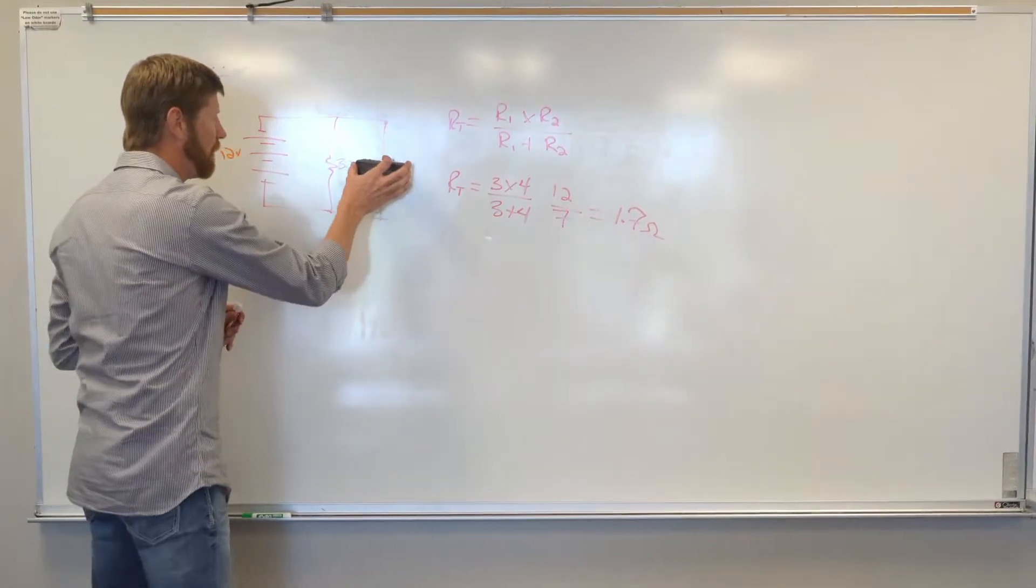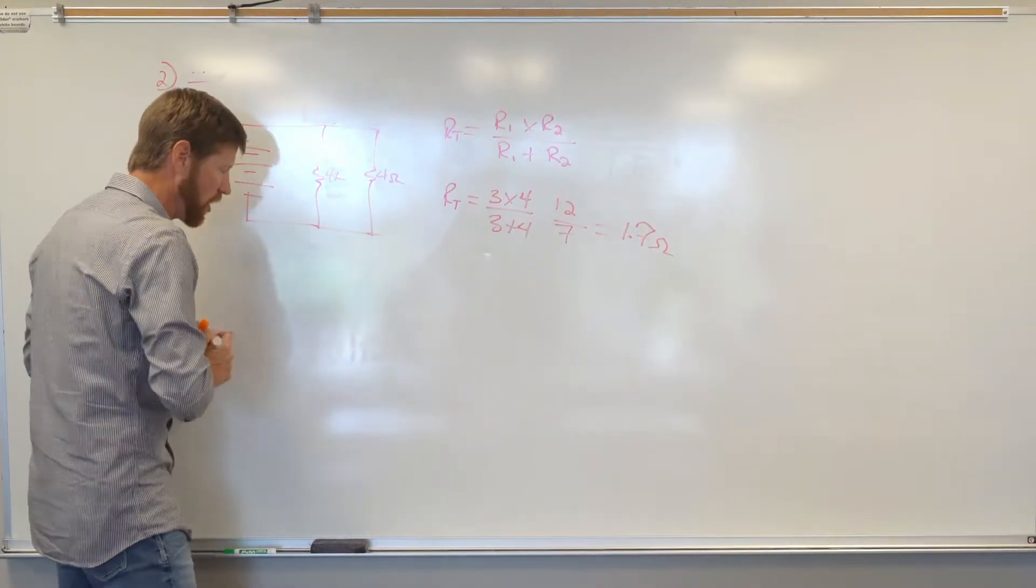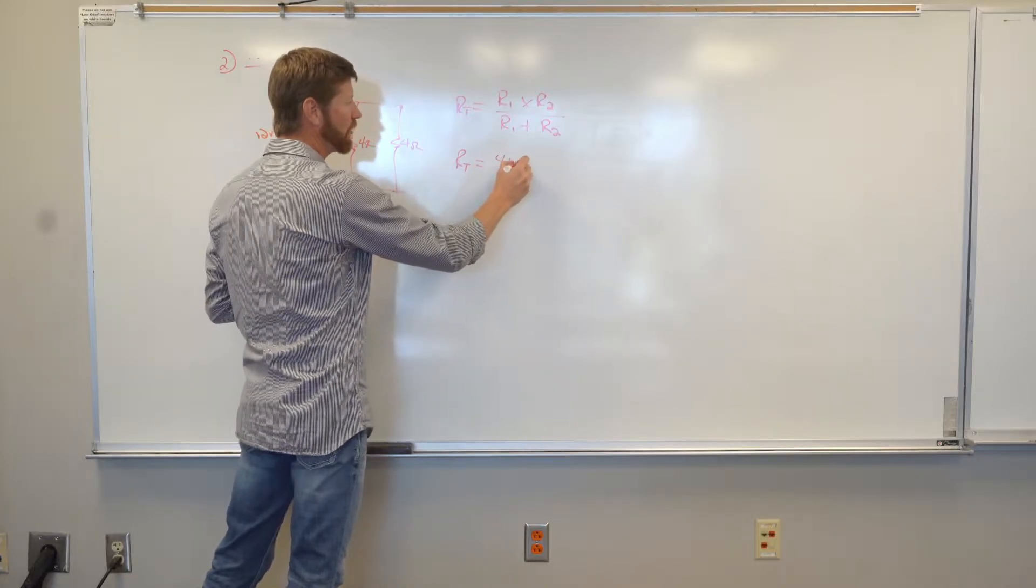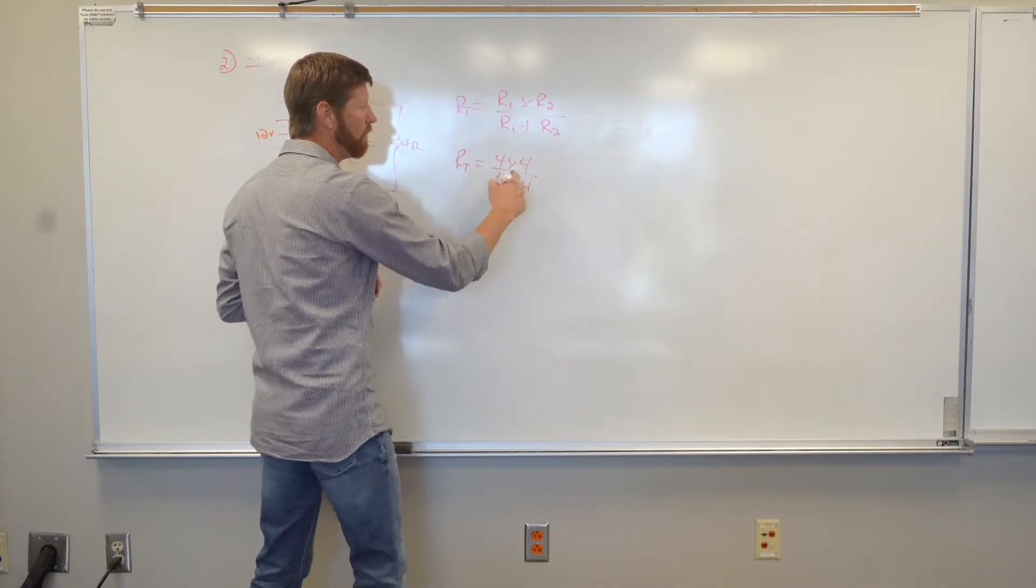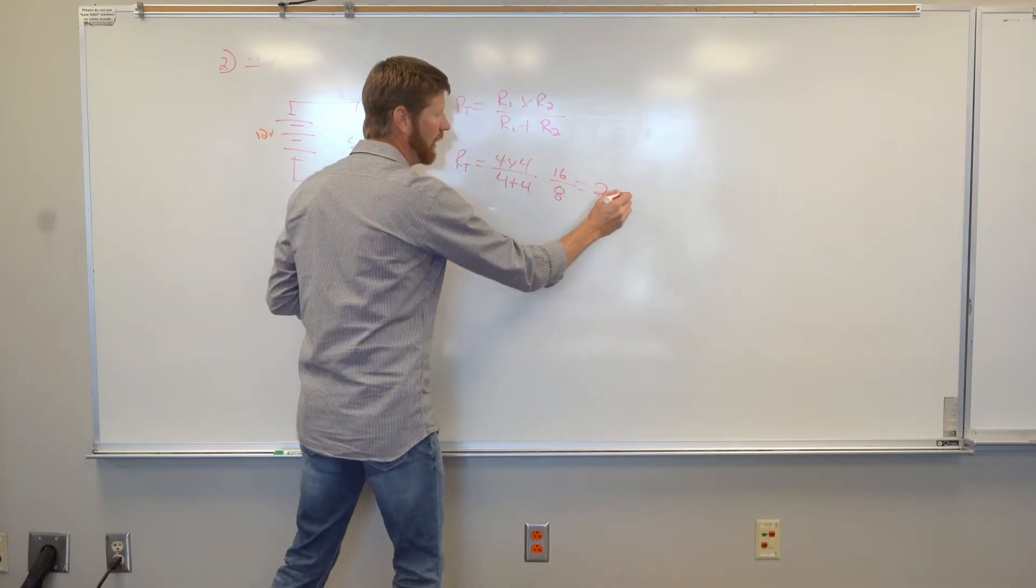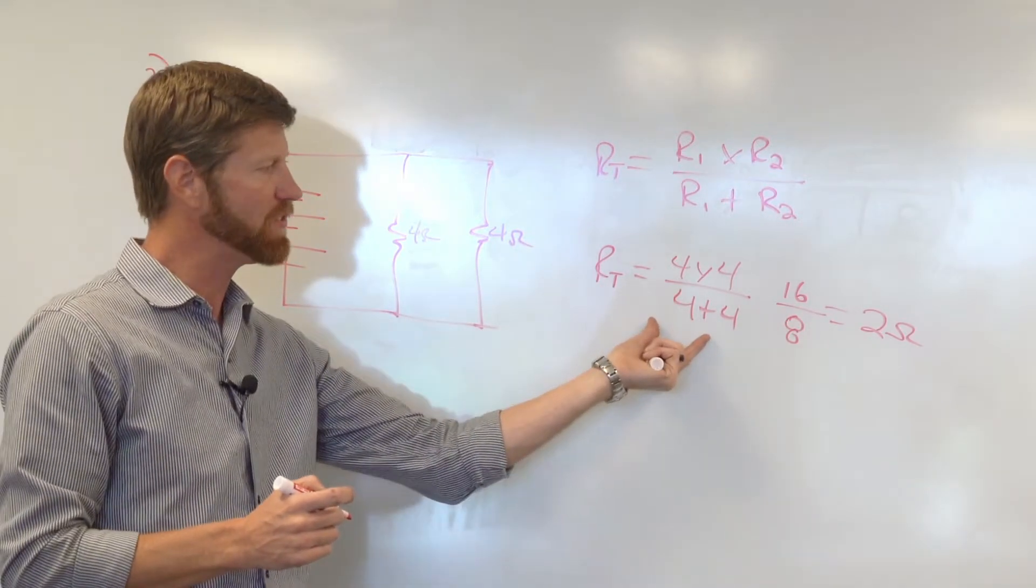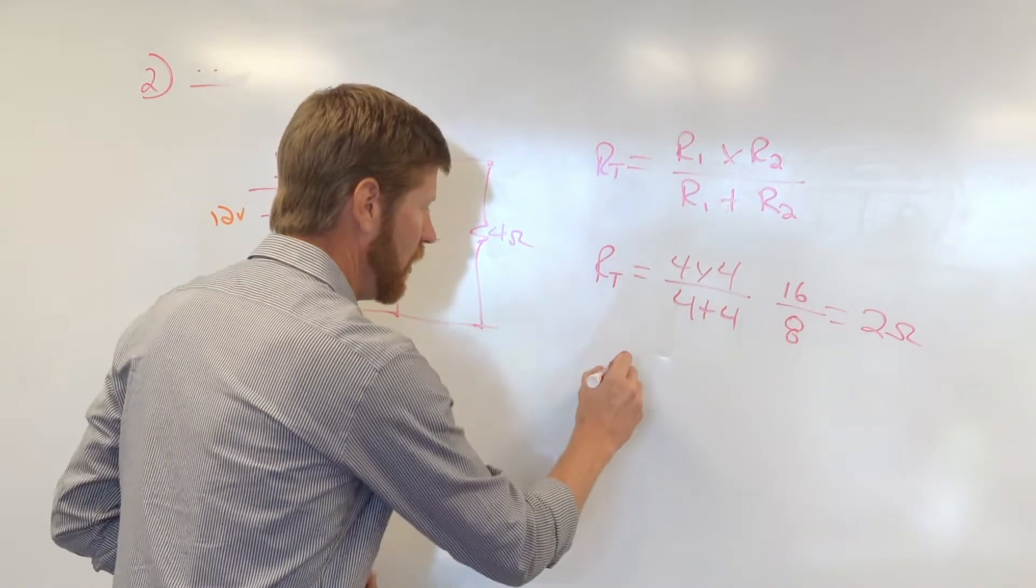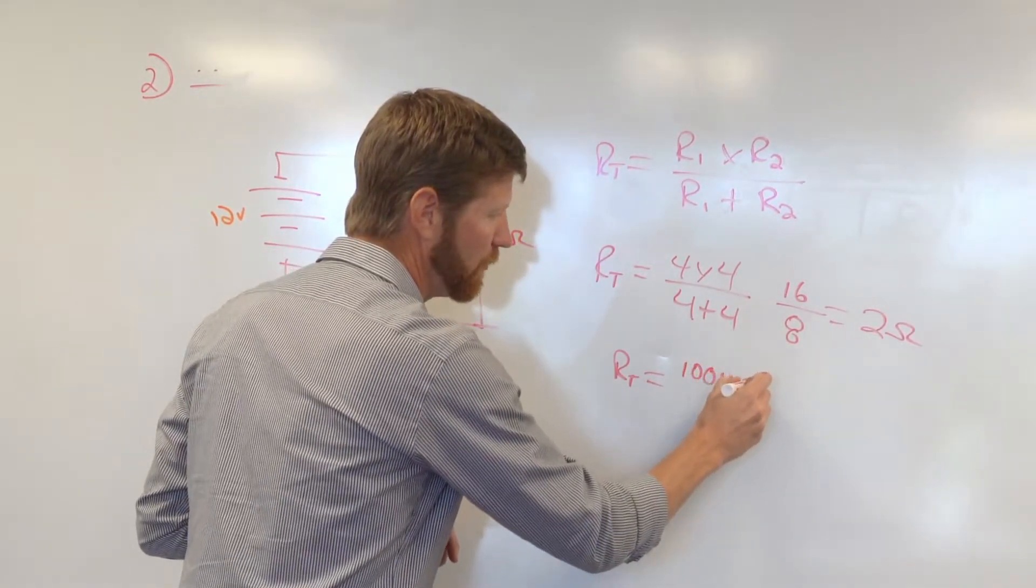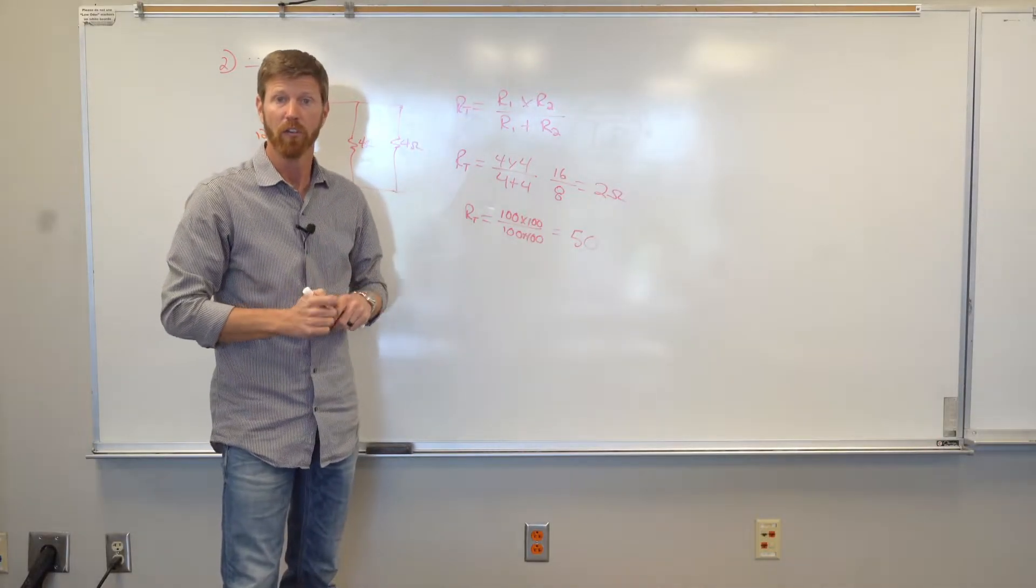However, what's popular in the automotive world is what if both of these resistors are the same? Then if we plug those numbers into this equation, I get a little bit different results. What's four times four over four plus four? Well, four times four is 16 divided by four plus four is eight. And I end up with two. Wait a second. So if the numbers are even, I plug them into this equation. I get half of one of those numbers. So let's do it again. Let's say that these numbers aren't four. Let's say they're a hundred. What's a hundred times a hundred over a hundred plus a hundred. I don't know. I just know when I do the math, I'm going to come out with 50. So see the pattern.